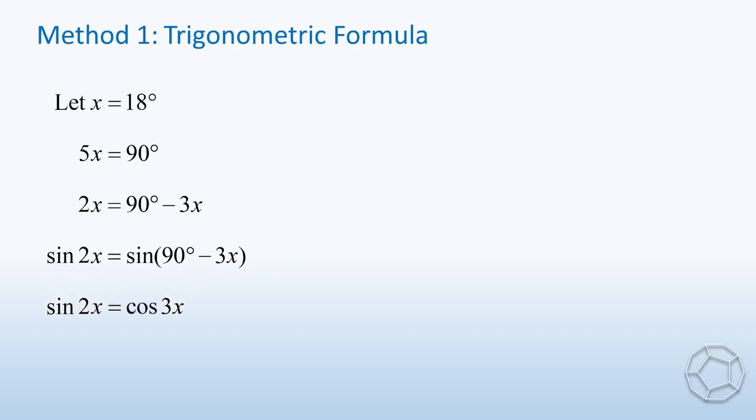Let's get started. For the first method, we let x equal to 18 degrees. Then, 5x is equal to 90 degrees. Subtract 3x on both sides. Now, we take sine for both terms. The right-hand side is equal to cosine 3x.